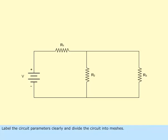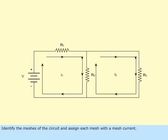Label the circuit parameters clearly and divide the circuit into meshes. Identify the meshes of the circuit and assign each mesh with a mesh current.